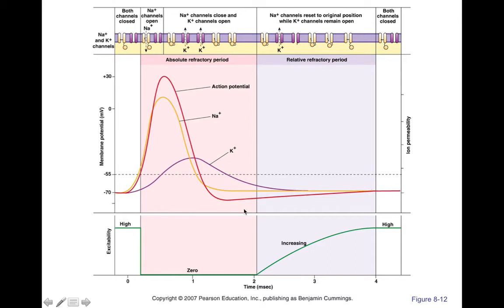Do you see how there are zones here — a pink zone and a purple zone? This pink zone we call the absolute refractory period. The absolute refractory period is the period of time it is absolutely impossible to generate another action potential. You can't generate another action potential because this is after the voltage-gated sodium channels have been activated and they're not ready to be reactivated. The significance of this is you don't want action potentials to overlap — you want them to stay separate.